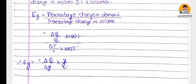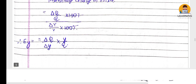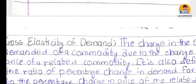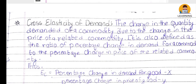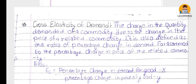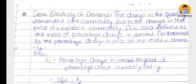Now we have the last type: cross elasticity of demand. Cross elasticity of demand is the change in the quantity demanded of a commodity due to the change in the price of a related commodity. For example, Coke and Pepsi - if the price of Pepsi changes, the quantity demanded of Coke changes. This is cross elasticity of demand.